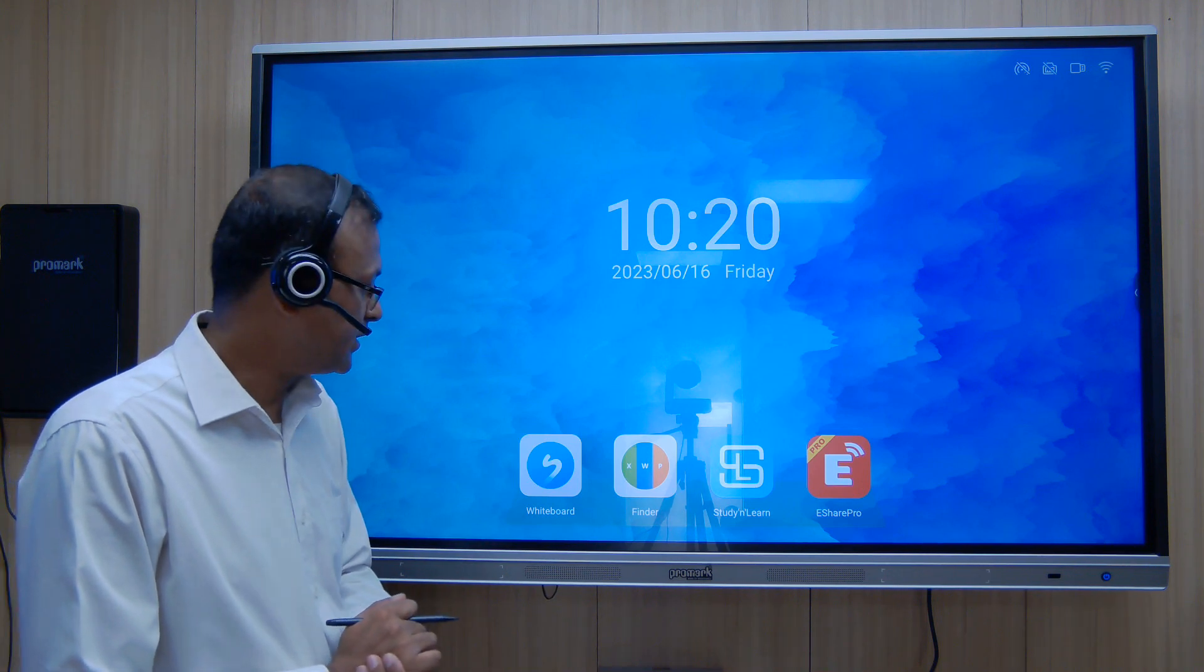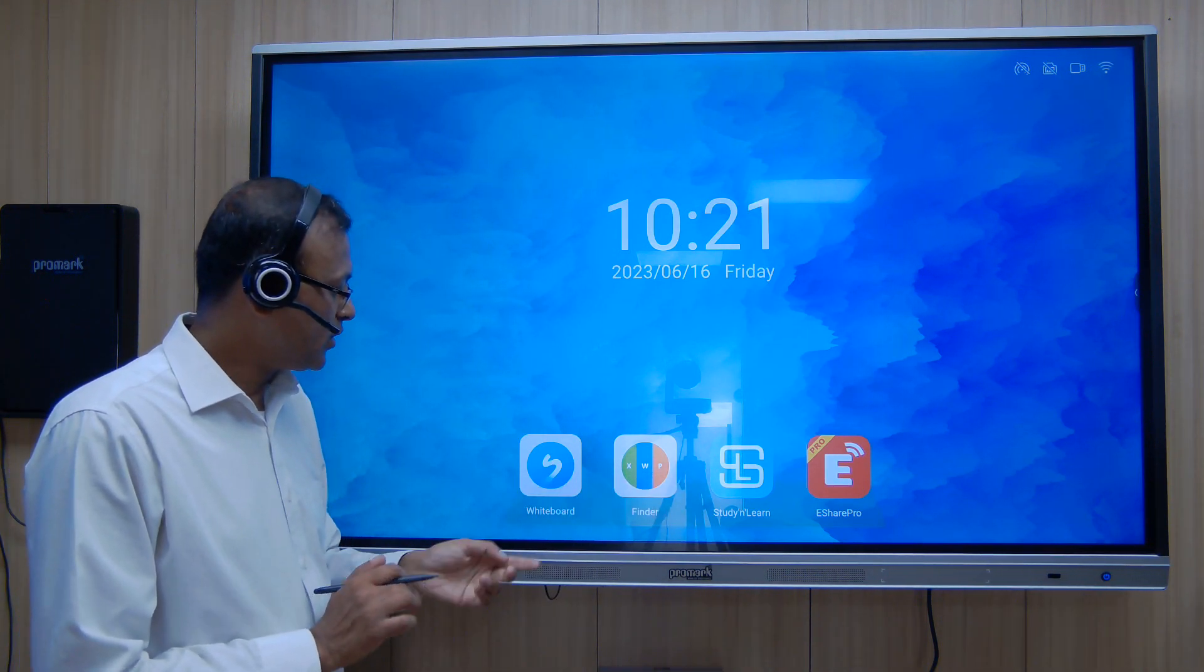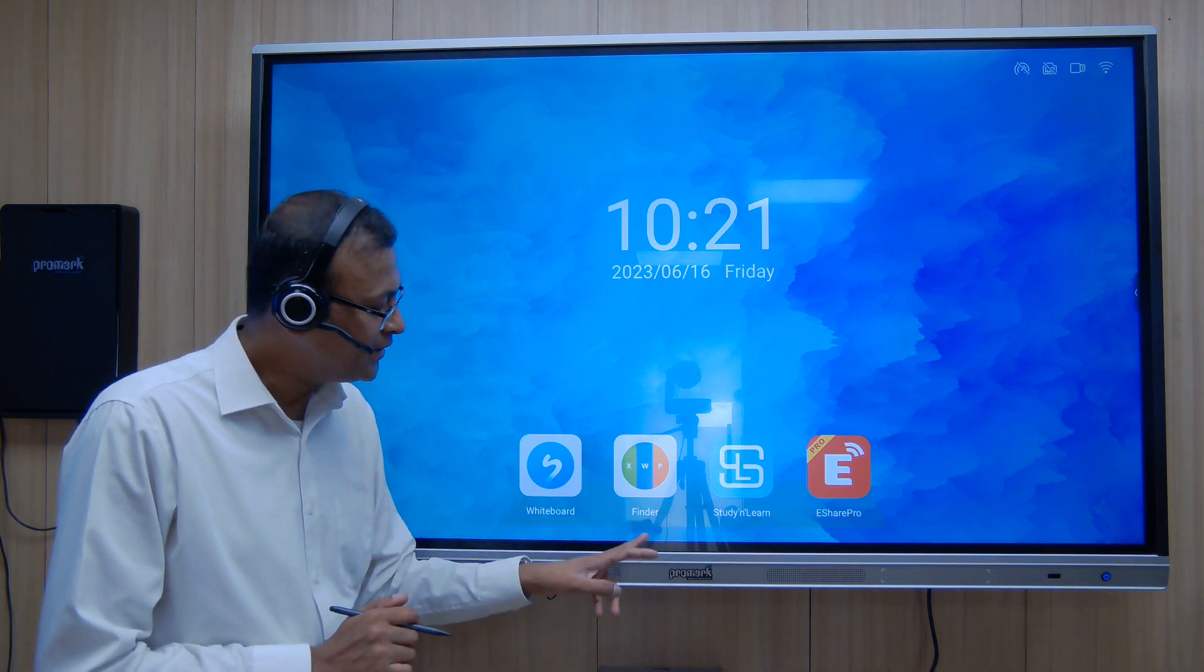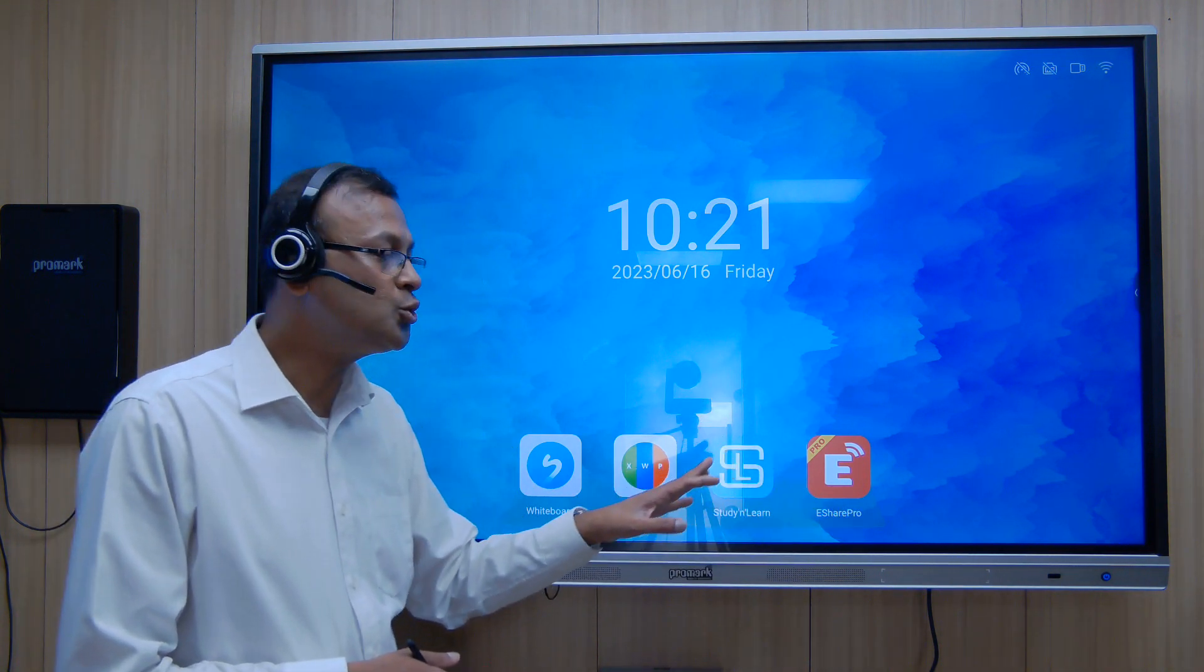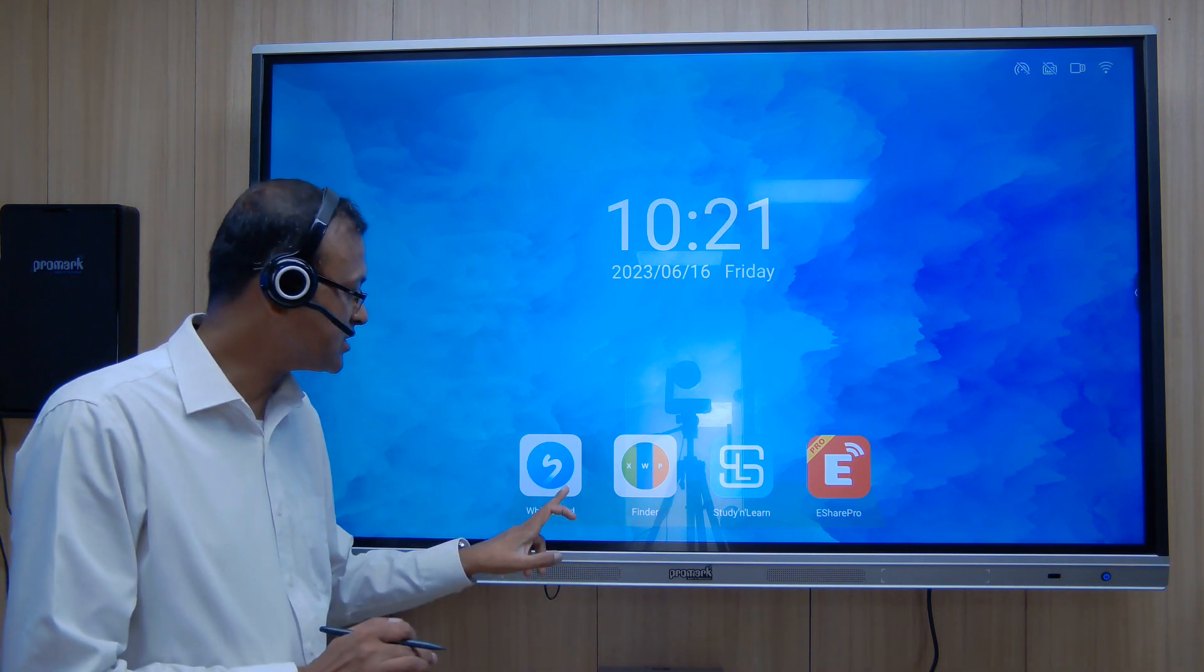Now let's come to the software part of it. If you see here there are four icons: whiteboard, finder, study and learn, and eShare Pro. We will go through this one by one. Let's start with the most important one which is the whiteboard.